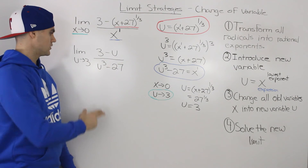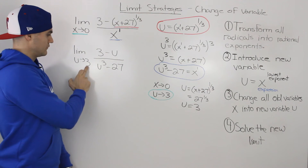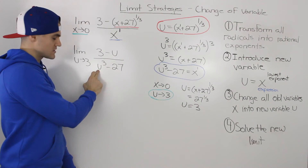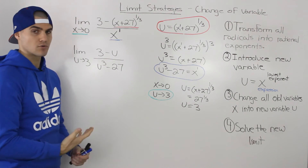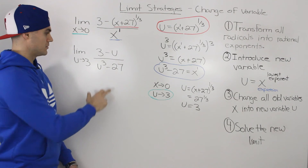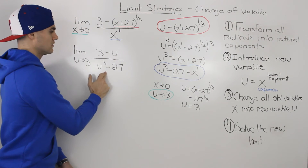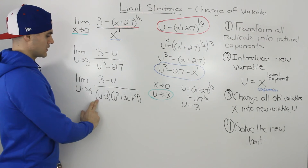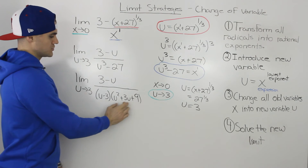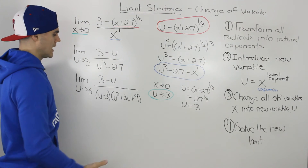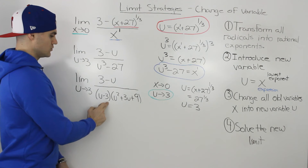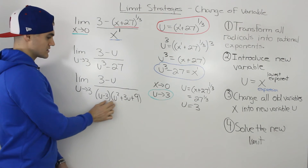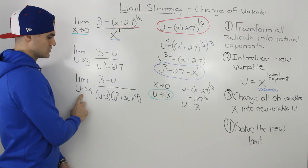Checking for direct substitution: if we plug in u equals 3, we get 3³ minus 27 equals 27 minus 27 equals 0 in the denominator, so direct substitution doesn't work. But notice the denominator u³ minus 27 is a difference of cubes, so we can factor it as (u minus 3)(u² + 3u + 9).